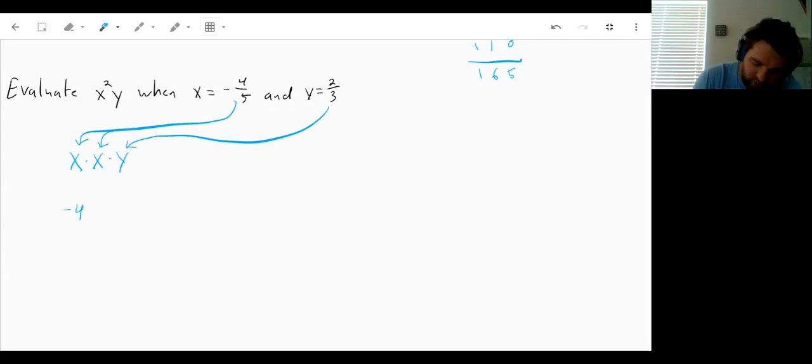So negative 4 fifths times negative 4 fifths times 2 over 3. Now when you're multiplying multiple fractions by each other, you can still just multiply across the top, multiply across the bottom.